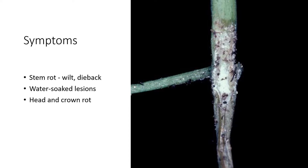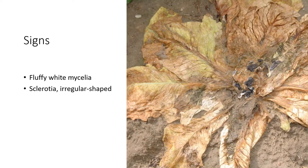In lettuce we'll see head and crown rots at the base of the plant. The signs of the Sclerotinia disease or signs of the pathogen will be that white fluffy mycelia seen in the previous photo — that is the thread-like body of the fungus itself. Most importantly, the sclerotia are these irregularly shaped structures, the black structures in the center of this lettuce image, and the sclerotia are the long-term survival or overwintering structures.